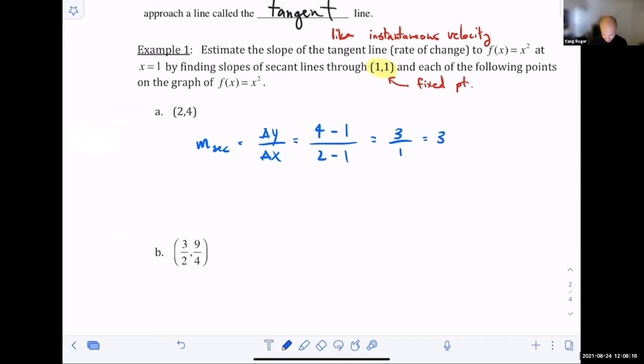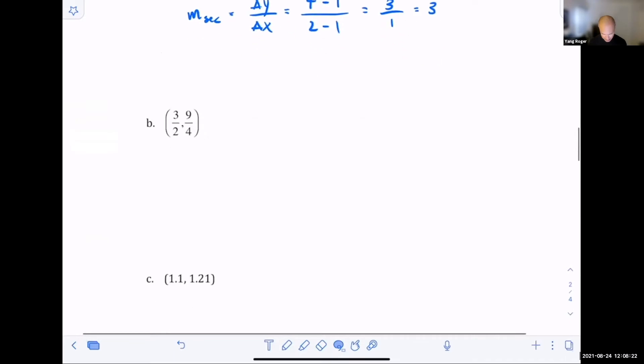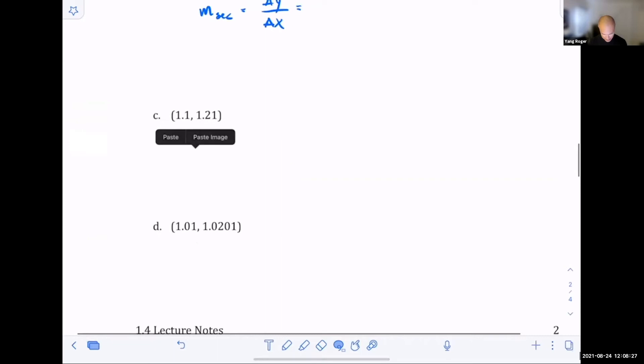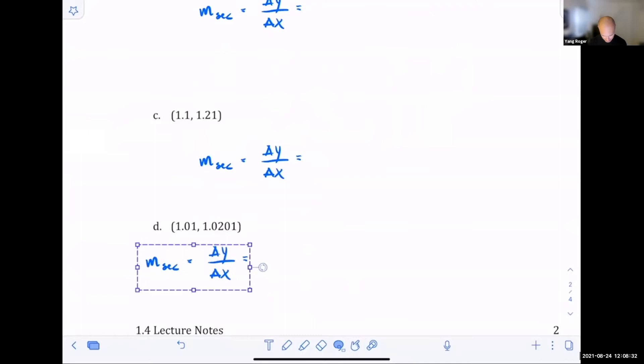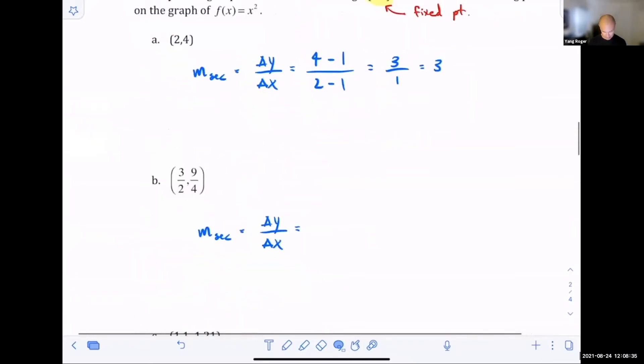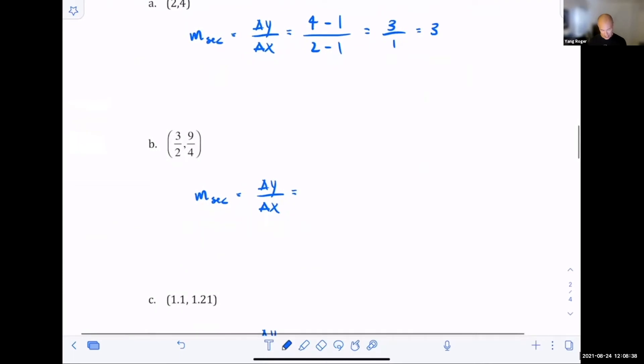Let's look at the next example. In this case, my change in y values will be nine over four minus one over three over two minus one. That's going to give me five over four divided by one over two.